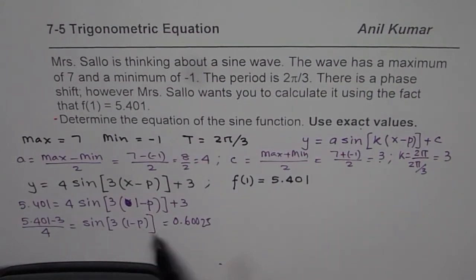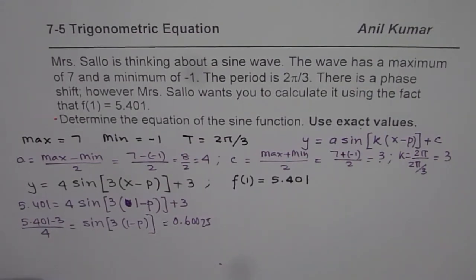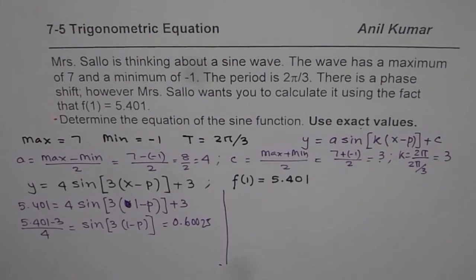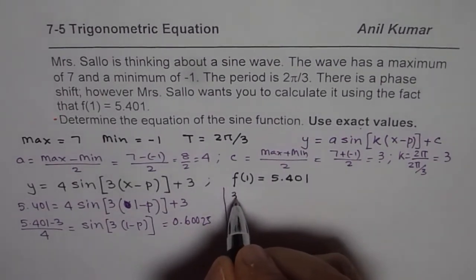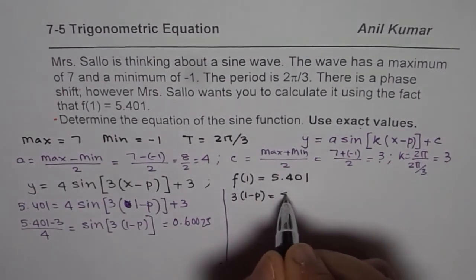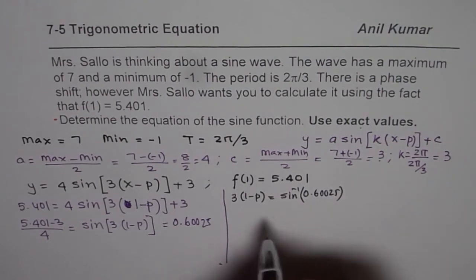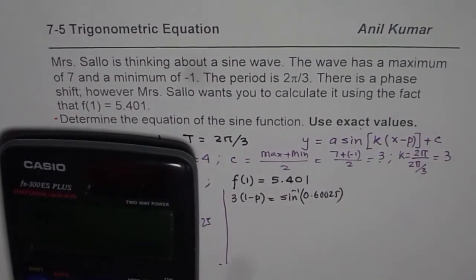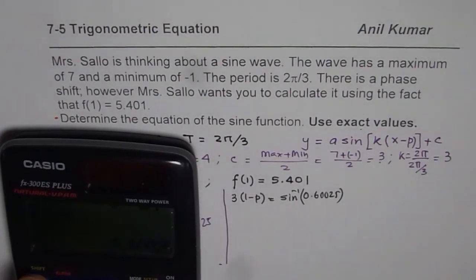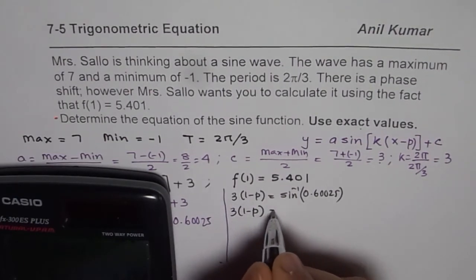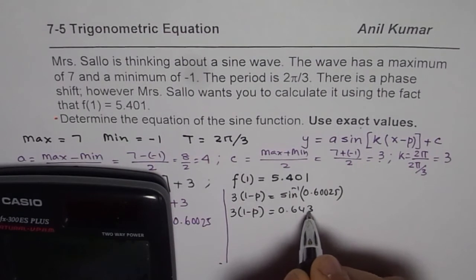This value is equal to 0.60025. Now we have to find sin inverse of this value to get the value of p. Let me use this space now. We will use different ink also so that it helps. We have 3(1 - p) equals sin inverse of 0.60025. So let's do sin inverse of this. We have the answer, shift sin inverse of the answer equals 0.64381.